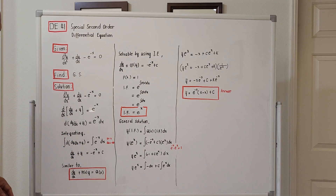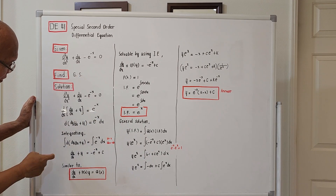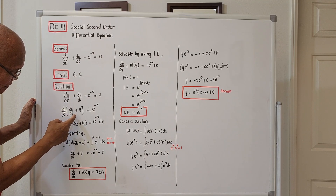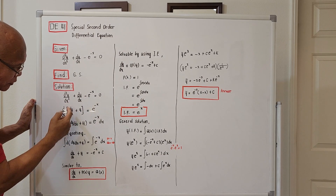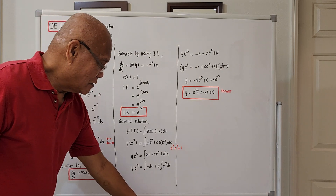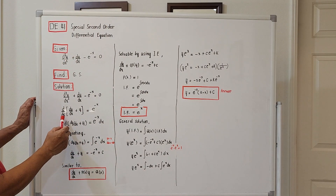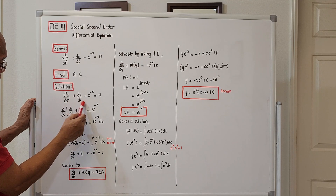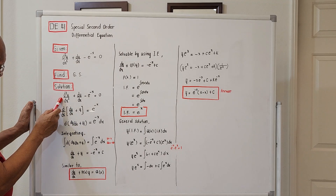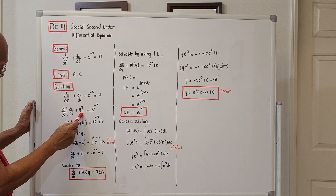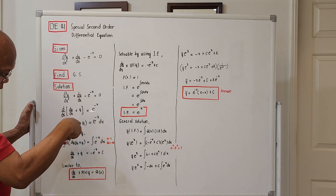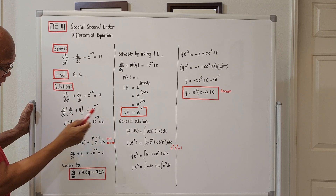I will try to rearrange — the first two terms can be written as simply the derivative with respect to x of the quantity (dy/dx + y), and I will place the remaining term on the right side. There's no magic here: by definition, the derivative with respect to x of the first derivative is the second derivative, and the derivative with respect to x of y is dy/dx. So this becomes d/dx(dy/dx + y) = e to the negative x.